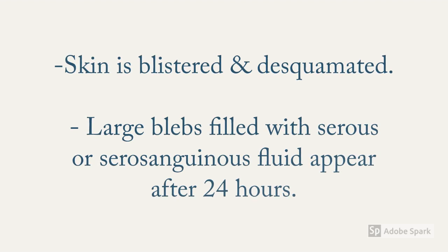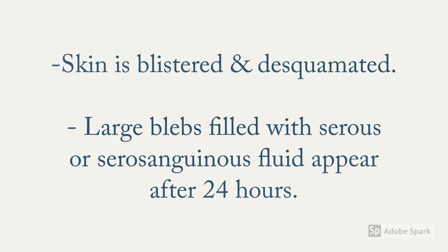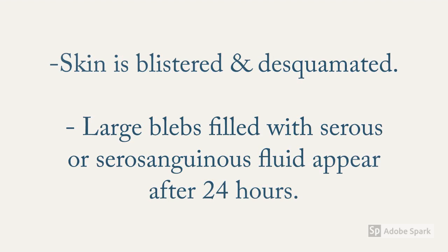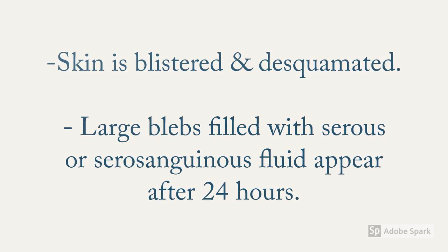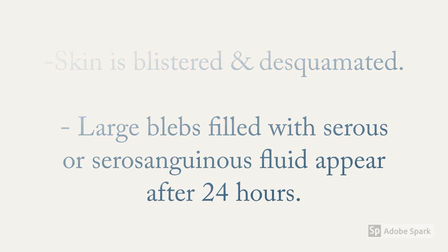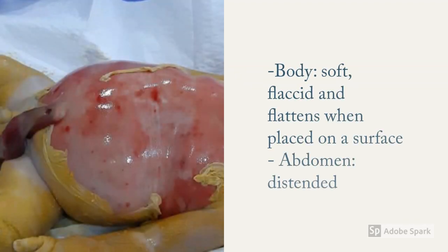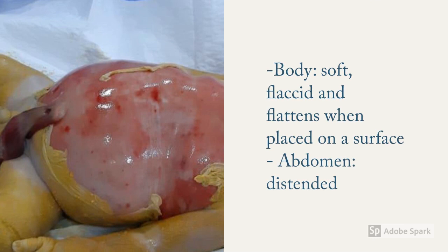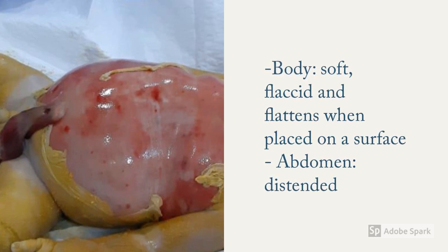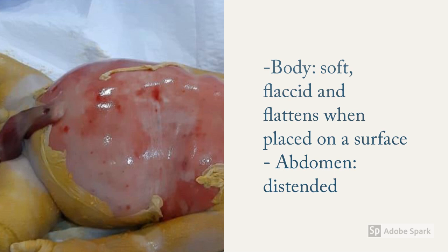one needs to take note of everything from skin to bones, and viscera to brain. The skin is blistered and desquamated and presents with large blebs which are filled with serous or serosanguinous fluid. The body of the dead fetus is soft, flaccid, and flattens when placed on a surface, and the abdomen is distended as seen in the picture.